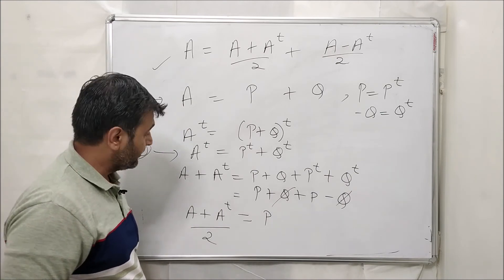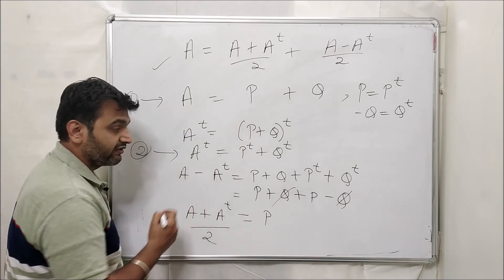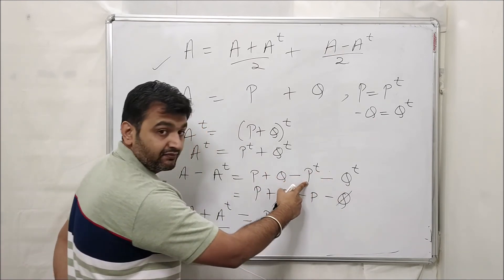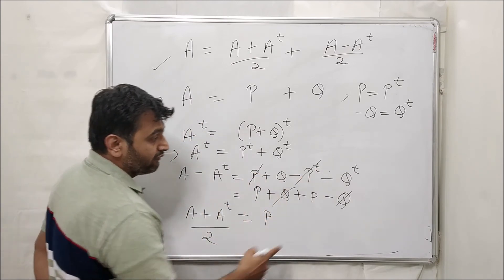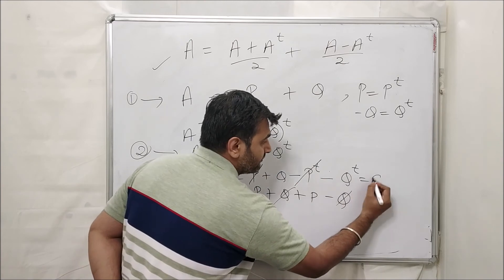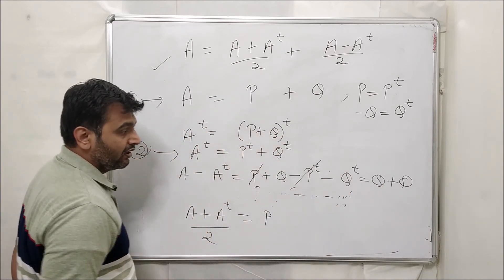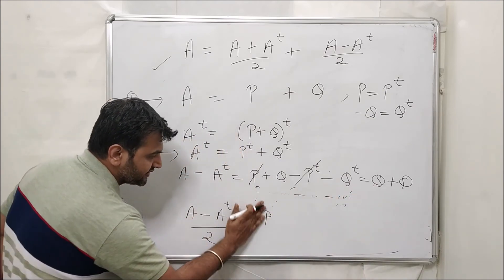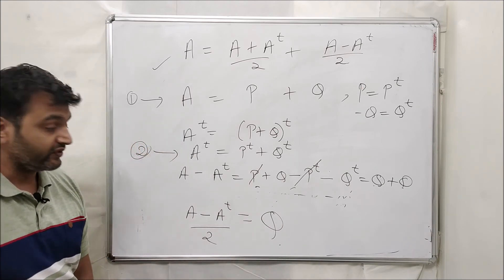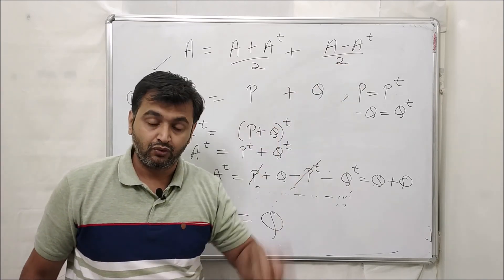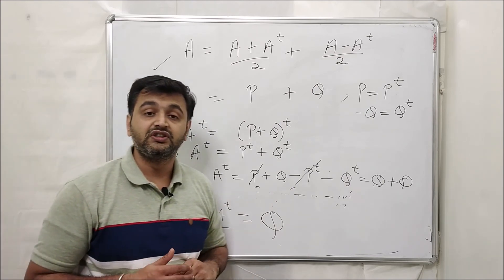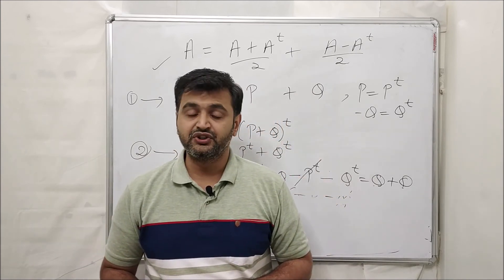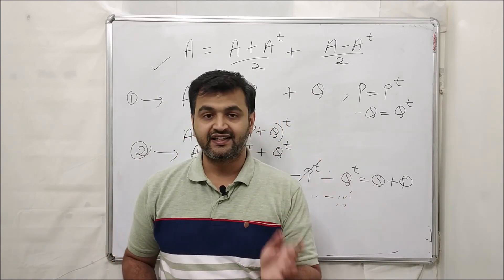Similarly, subtracting the two equations gives A − Aᵀ = Q + Q = 2Q, so Q = (A − Aᵀ)/2 — exactly our skew-symmetric part. Therefore the decomposition is unique. I hope you understood the decomposition. If yes, please like, share, and subscribe. Thank you.